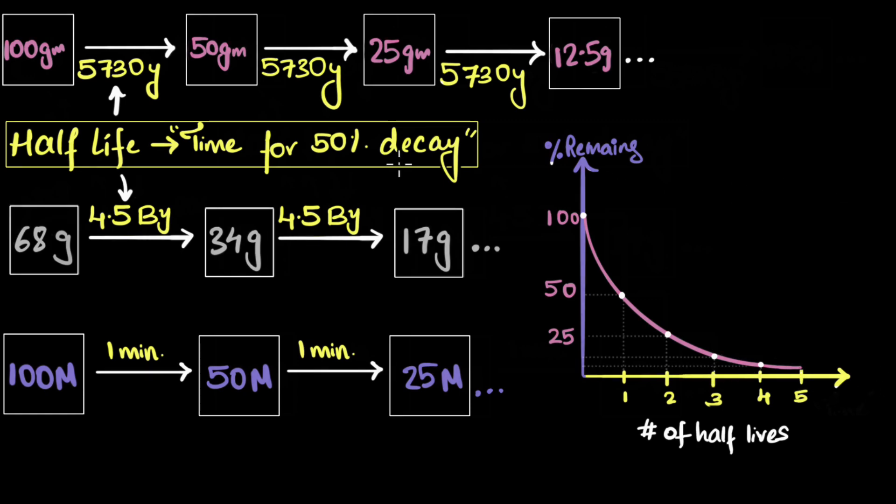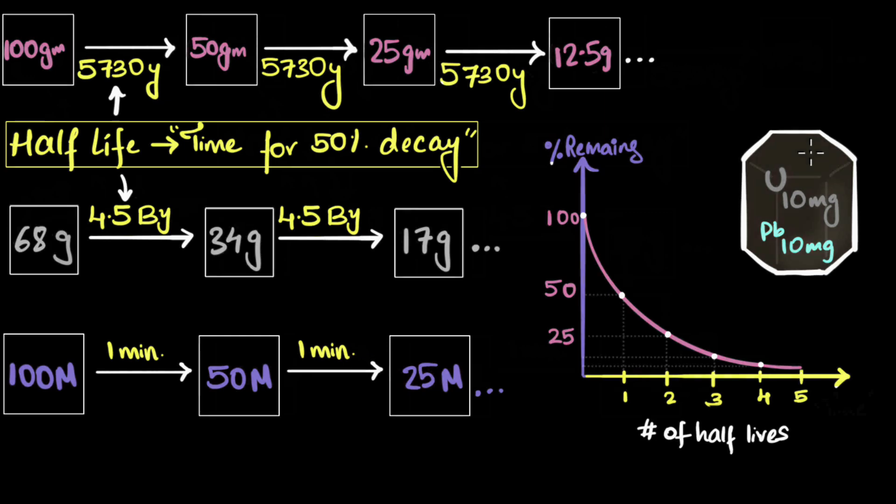This now brings us to our original question. How do you figure out age of things? For example, how do you figure out how old Earth is? Geologists use what we call zircon crystals. I'll tell you what's so special about these crystals. They absolutely hate lead. We'll not worry about why that is the case, but that turns out to be true. But let's say you find a zircon crystal, and inside you'll find some traces of uranium and some lead as well. And just to take simple numbers, I'm just taking 10 milligrams and 10 milligrams over here.